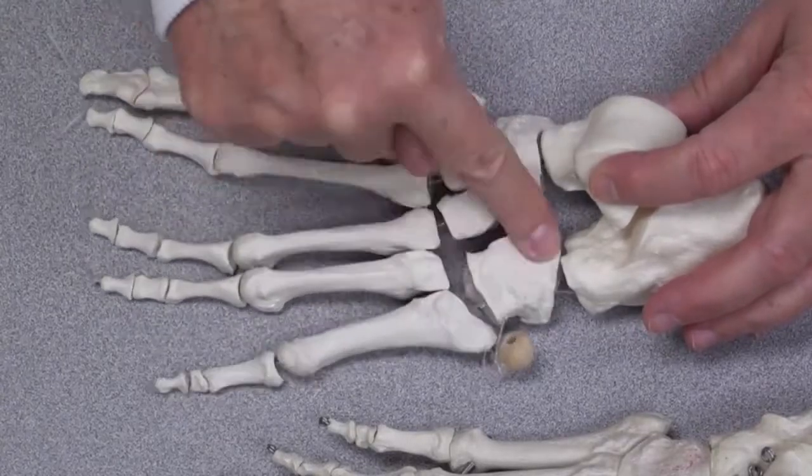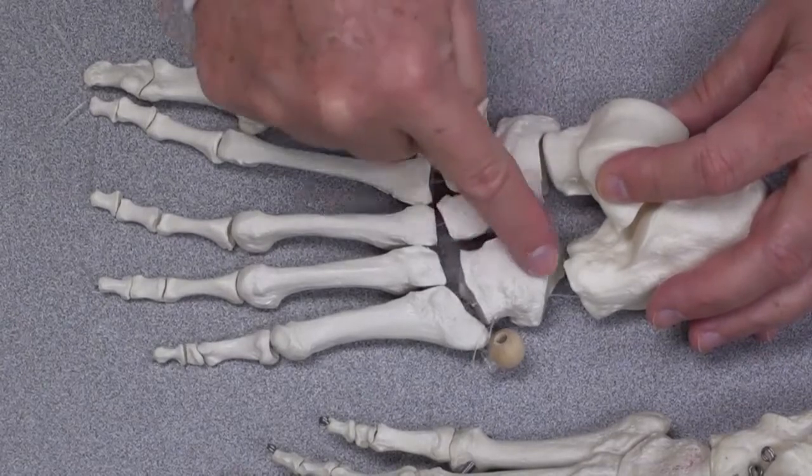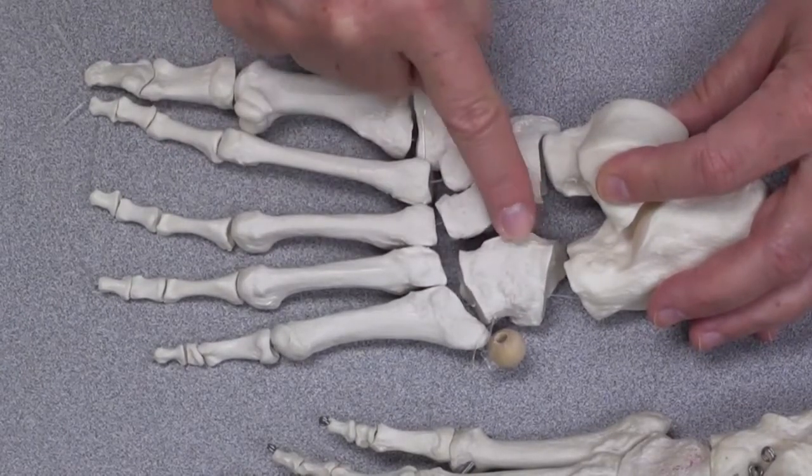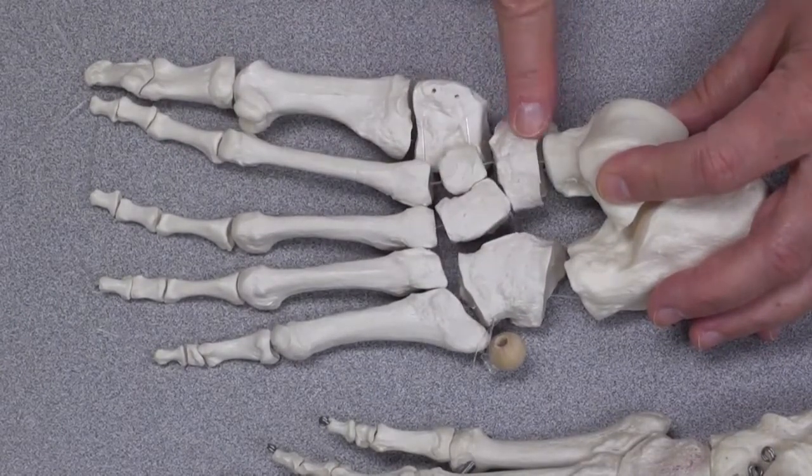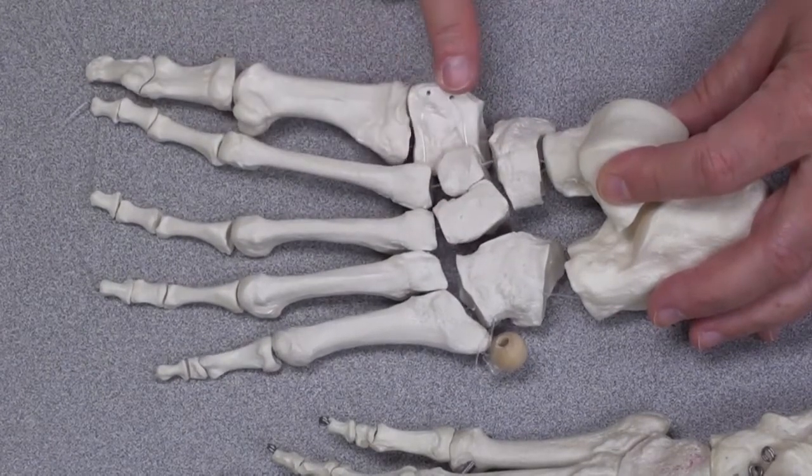Now that the other tarsal bones are sort of spread out a little bit, you can see their shape a little bit better. As I said, here's the cuboid, a bit of a cube. Here's the navicular, almost a disc, and these are the three cuneiform bones.